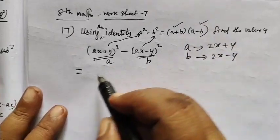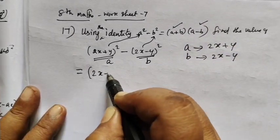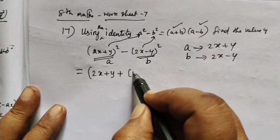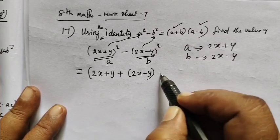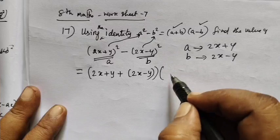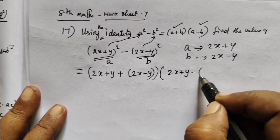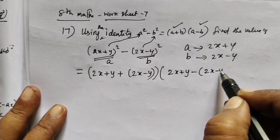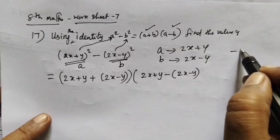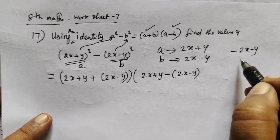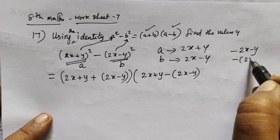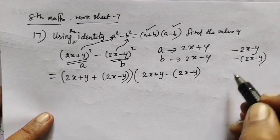1 plus 1 minus. So, first plus, then next minus. 2x plus y, minus b. Bracket, minus b.